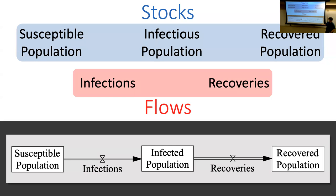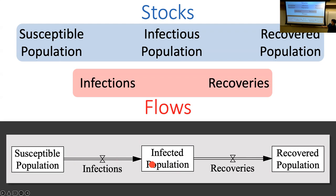The way we would model this inside Vensim or Insight Maker is to draw three stocks: susceptible, infected population — it's more traditional to say infectious, since we want to capture that they're actually spreading the disease — and recovered. Then we have flows: infections as an outflow from susceptibles and inflow to infected; recoveries as an outflow from infected and inflow to recovered. What we'll build up in the next slides is how to actually write the formulas for the flows.